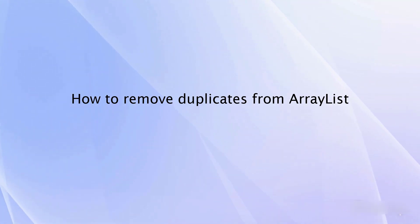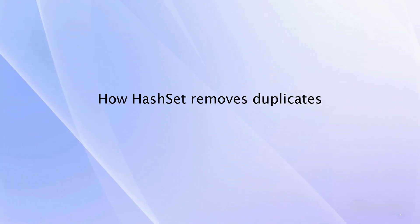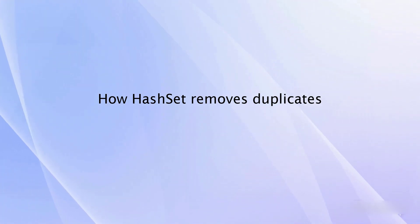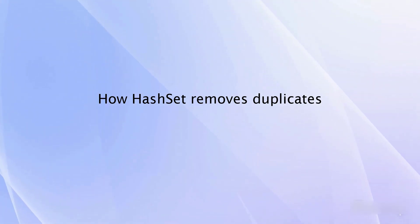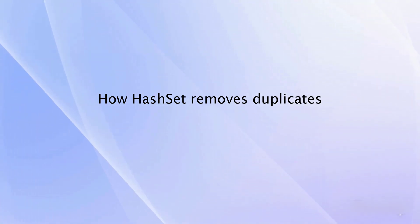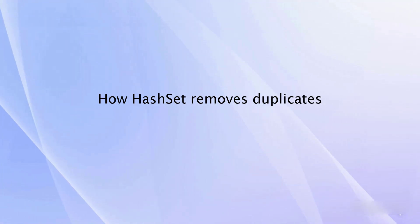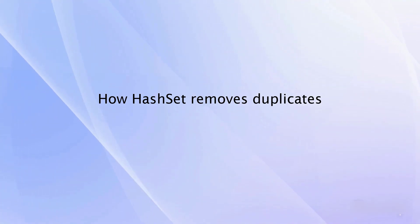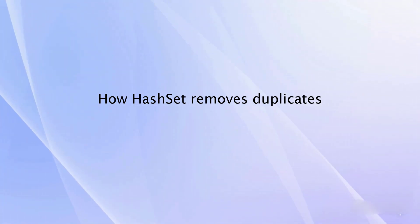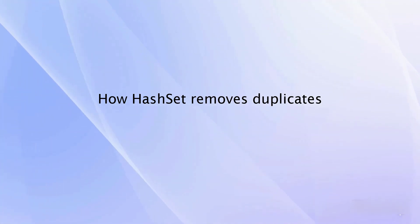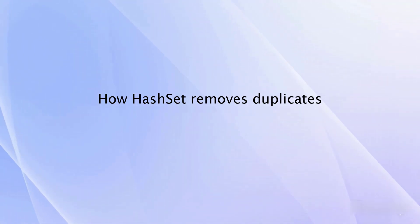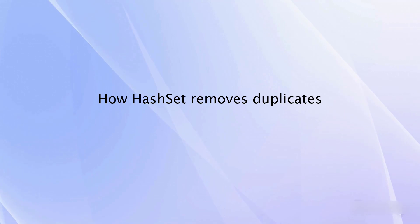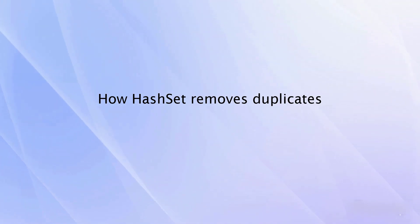How does HashSet remove duplicates? HashSet checks the values on the basis of the hash code. It generates a hash code for each value, and if the hash codes are the same, it won't allow the newer value.